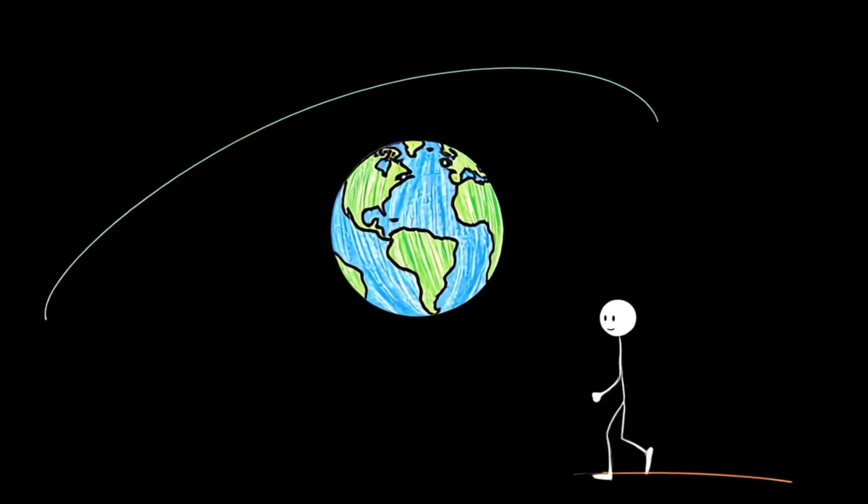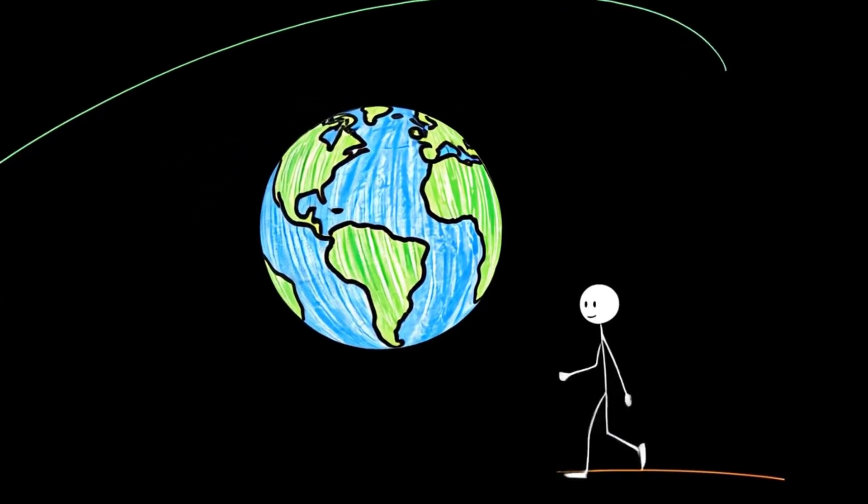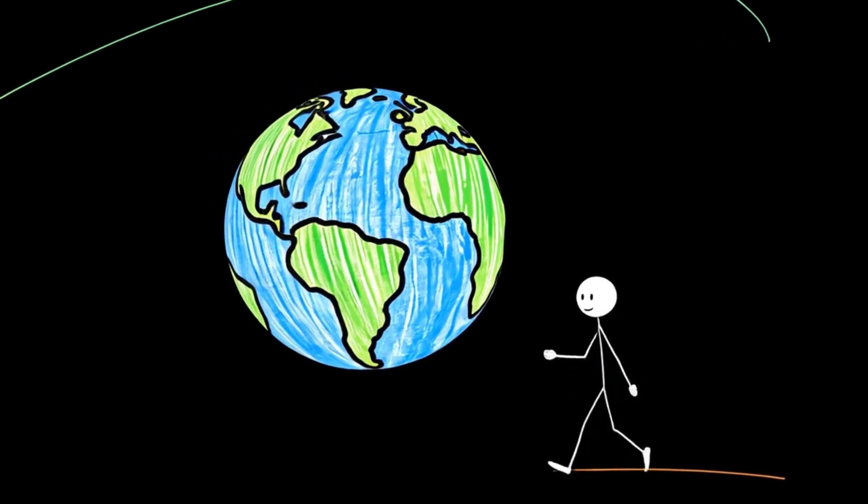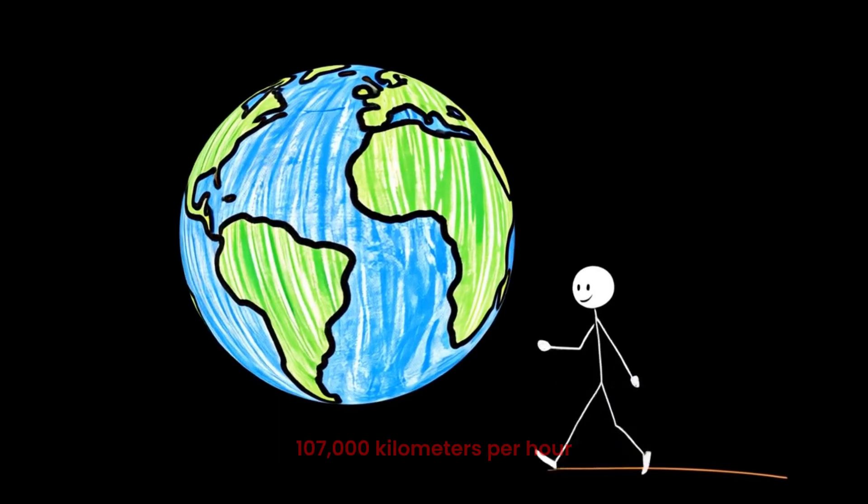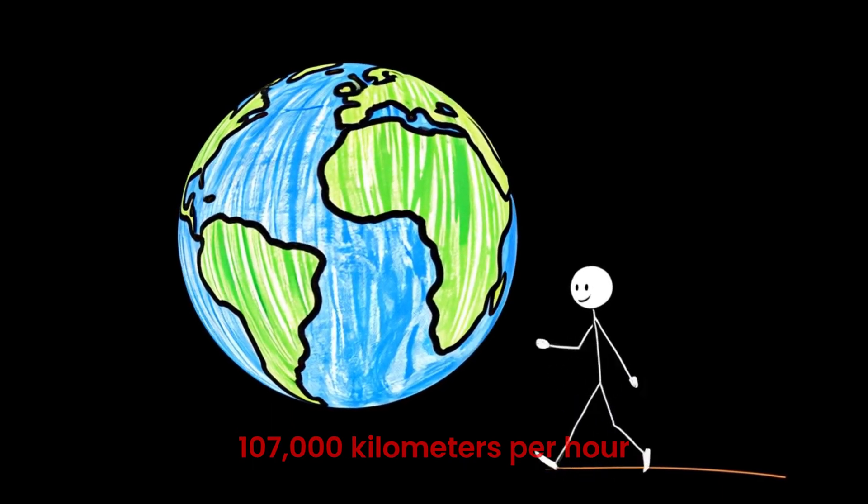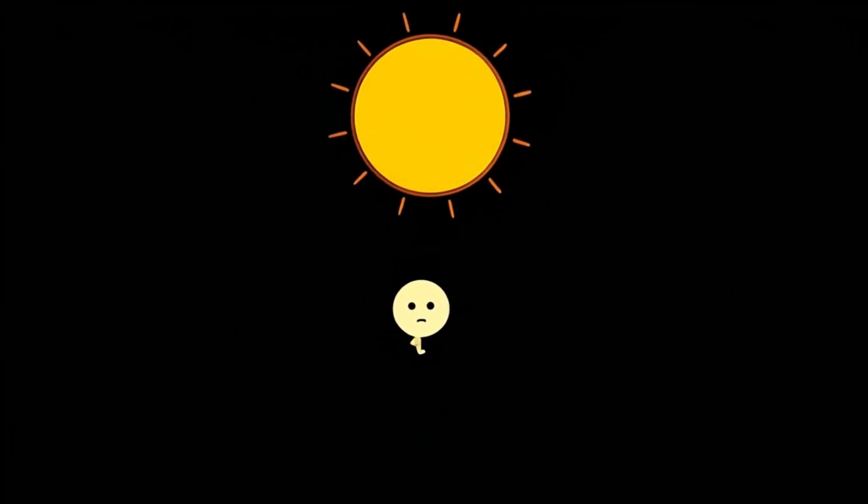The same thing happens to Earth's orbit around the sun. Instead of staying in its nice, predictable path, Earth would be violently repelled, shooting off into the cosmos at 107,000 kilometers per hour. At first, it wouldn't seem like much. Things would look normal for a few hours. But then the sun would get smaller. And smaller. And colder.